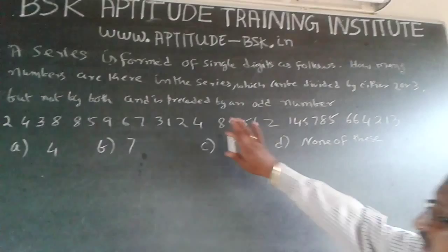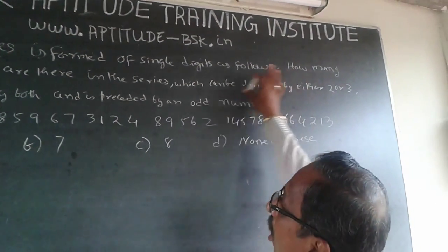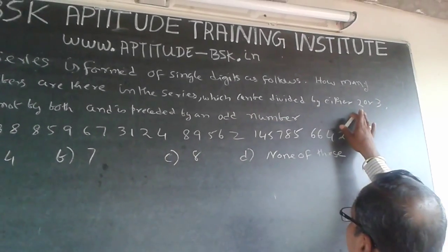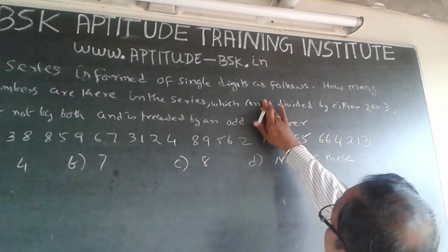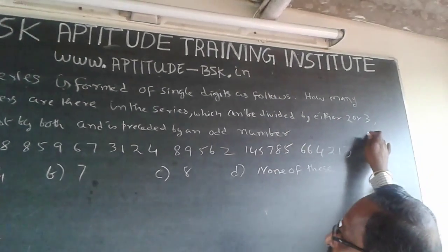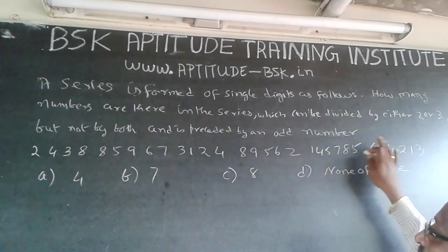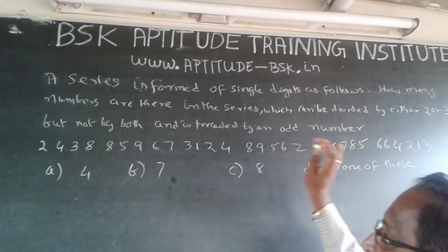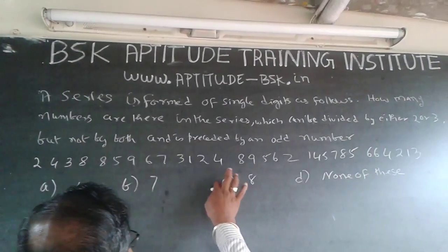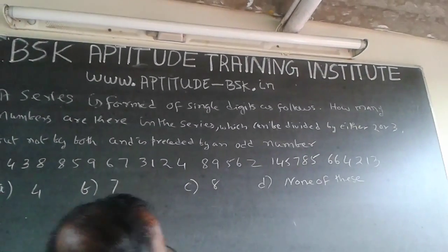The question: a series is formed of single digits as follows — how many numbers are there in the series which can be divided by either 2 or 3 but not by both, and is preceded by an odd number? The numbers given are: 2, 4, 3, 8, 8, 5, 9, 6, 7, 3, 1, 2, 4, 8, 9, 5, 6, 2, 1, 4, 5, 7, 8, 5, 6, 6, 4, 2.